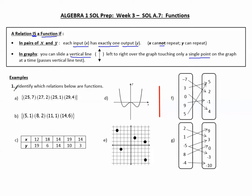Examples. Number one: identify which relations below are functions. In A, I'm looking at the x's to see if any repeat, because the x's cannot repeat. I see here's an x that's 25, and here's an x that's 25, going with two different y values. So therefore, this relation is not a function.